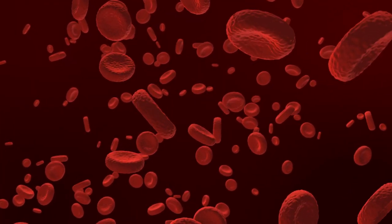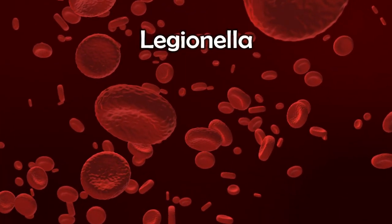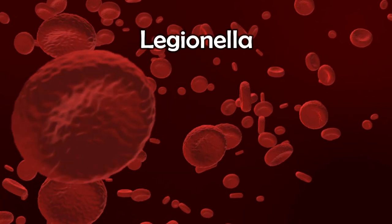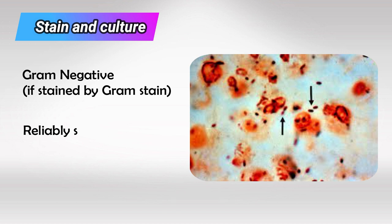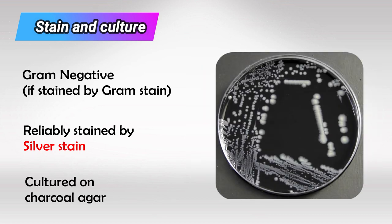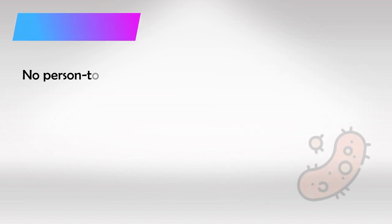Welcome back. In this video we'll talk about Legionella infection. This bacteria can be intracellular, so Gram stain is often negative, but if it does stain, it will be Gram negative. However, we can reliably stain them by silver stain. If you want the most reliable method of diagnosis, you can culture them on charcoal agar.